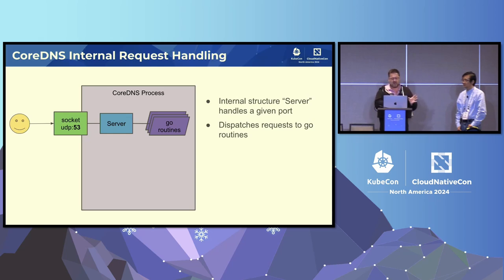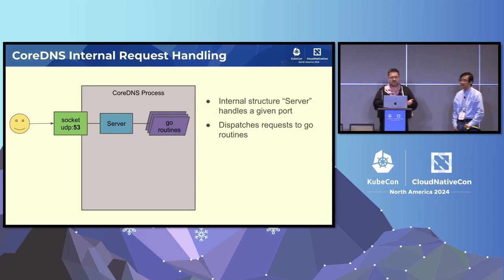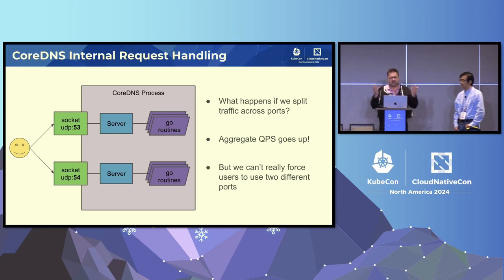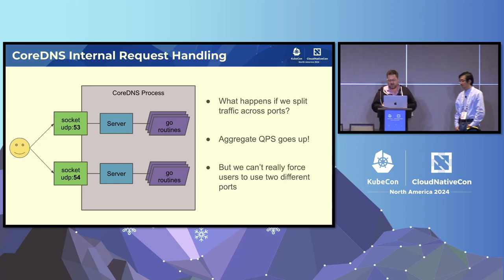The way CoreDNS works internally, inside the process you have a structure called a server that handles dispatching requests off of the socket to different Go routines which individually process the requests. The first contributor said 'I wonder if the bottleneck is somewhere in this process,' so he actually created another socket on a different port and tried to spray the requests across both ports. Lo and behold, the aggregate QPS basically doubled. That told us pretty quickly that the problem is right in this multiplexing across sockets. It's not practical to have users use port 54, so we needed a way to make it work with just one standard DNS port.